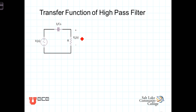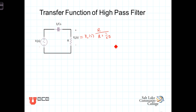We have that V out of S is equal to V in of S times R divided by the sum of the two, R plus 1 over Cs. This high-pass filter consists of a resistor in series with the capacitor, and we're taking our output voltage over the resistor.